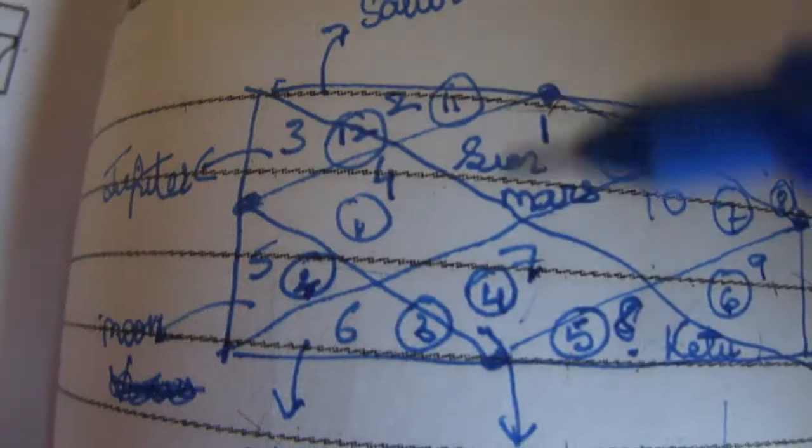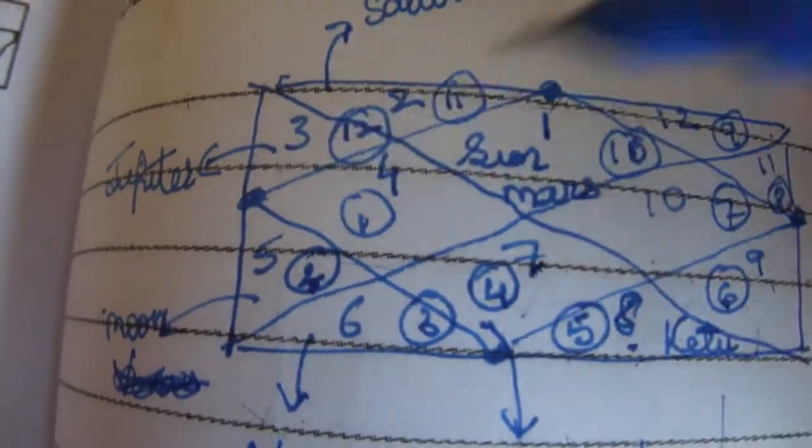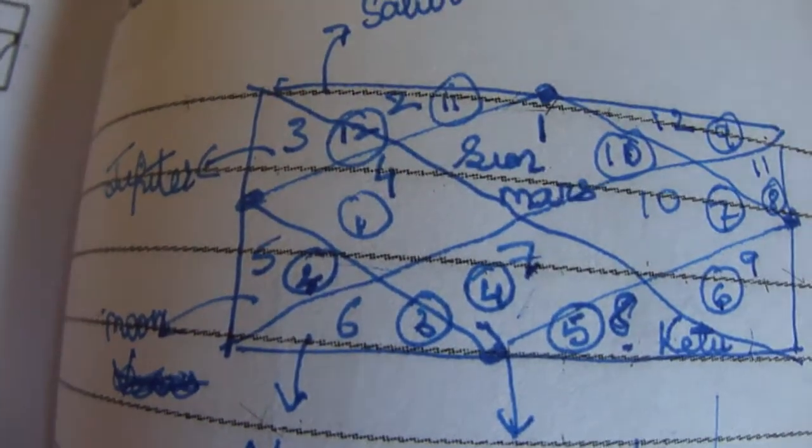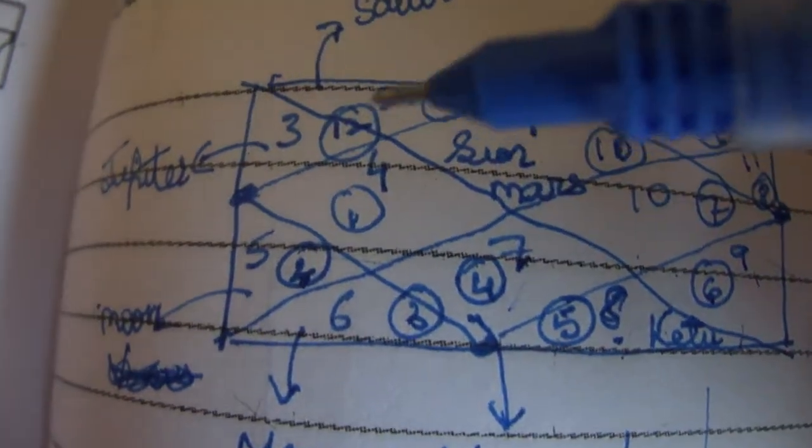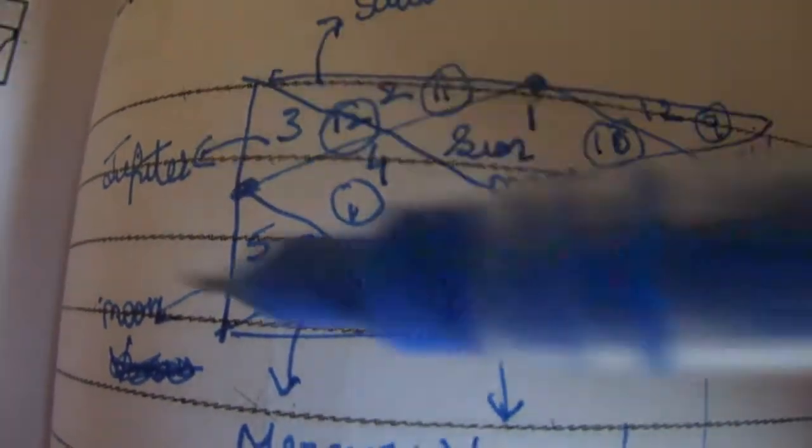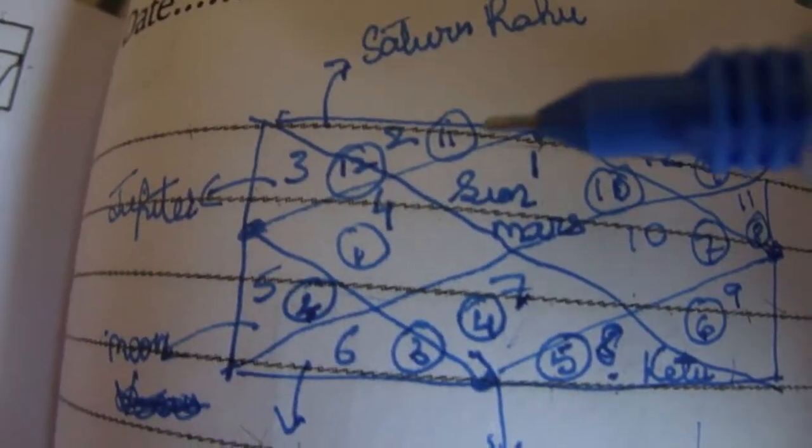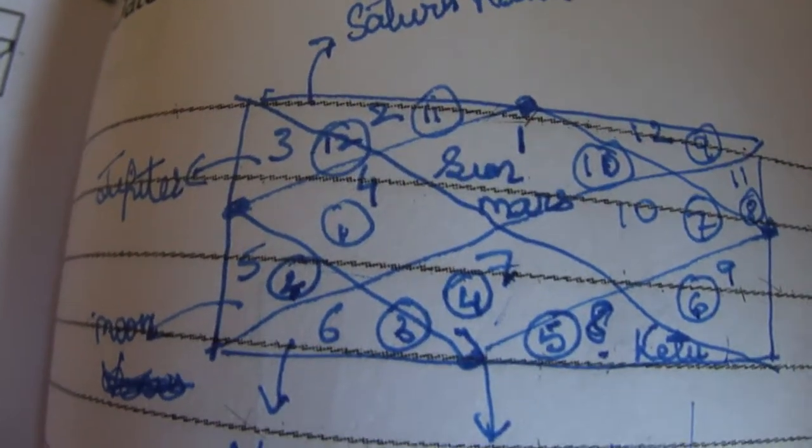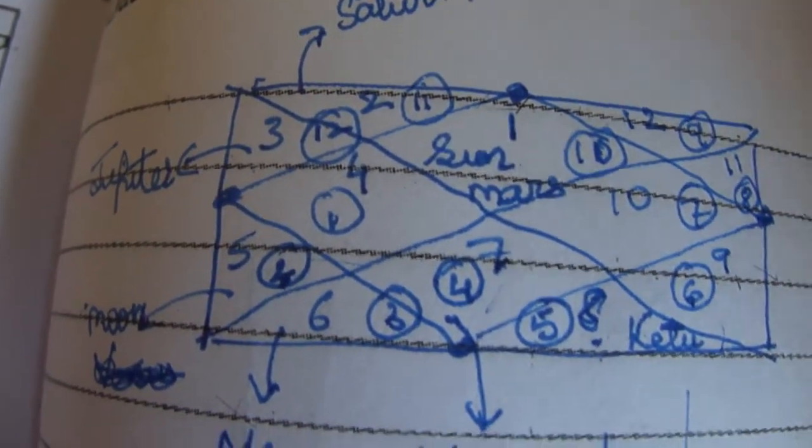Looking at other positions, Jupiter is placed in sign number 12 which is Pisces, so Jupiter is placed well. Saturn and Rahu are placed in sign number 11 which is Aquarius, so that is again a good placement. Yes, there are a lot of fortunate positions in this chart.